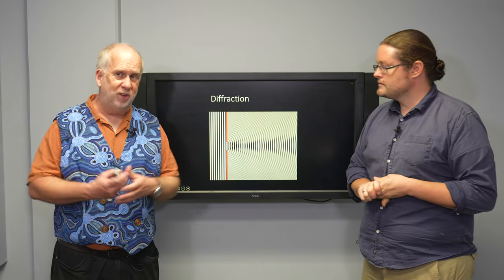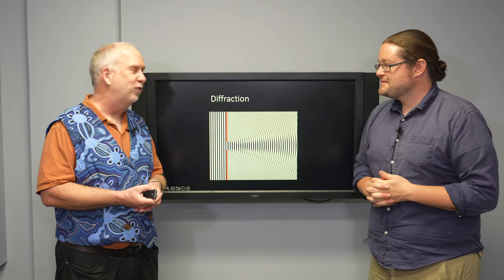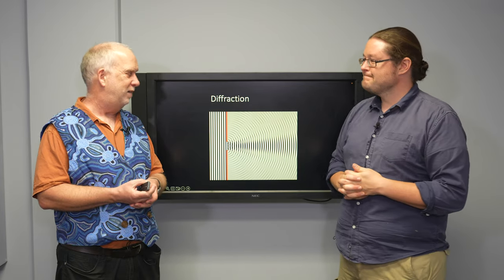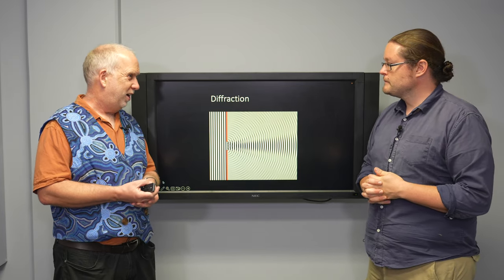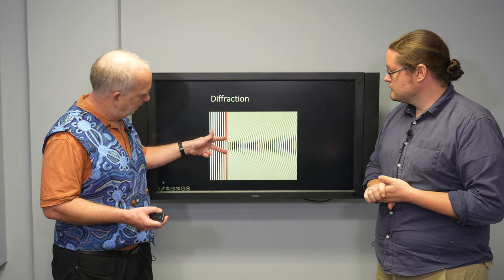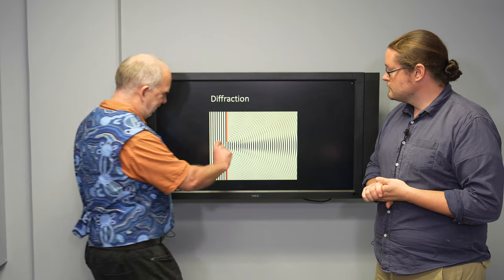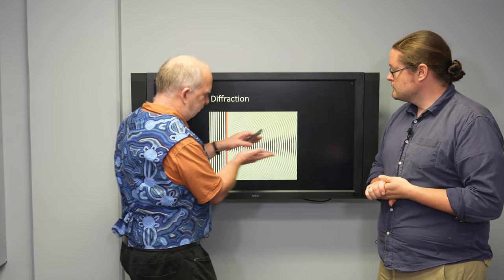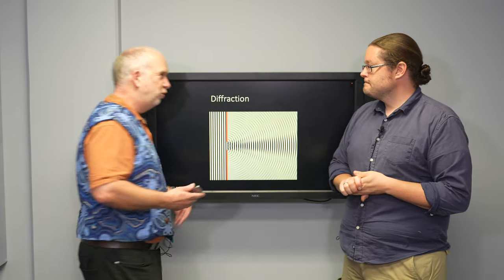Now, the problem with this is something called diffraction. Radio waves, like any other sort of wave, water waves, sound waves, doesn't always go in a straight line. That's right. So if you get waves and they go through a gap in a wall, mostly they continue going straight along here. But you see they sort of spread out a bit. That's right. And that's called diffraction.